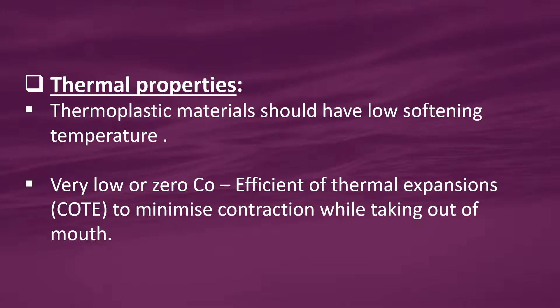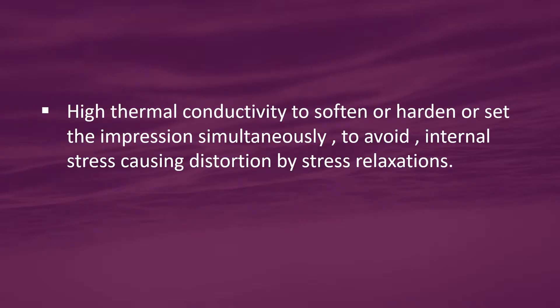Next, thermal properties: thermoplastic materials should have low softening temperatures — that is, 45°C to 55°C — and set or harden at 37°C. It should have very low or zero coefficient of thermal expansion to minimize contraction while taking out of the mouth; however, most impression materials have very high coefficient of thermal expansion, causing large contraction and distortion if thickness is not uniform. It should have high thermal conductivity to soften, harden, or set the impression simultaneously, to avoid internal stress causing distortion by stress relaxation.